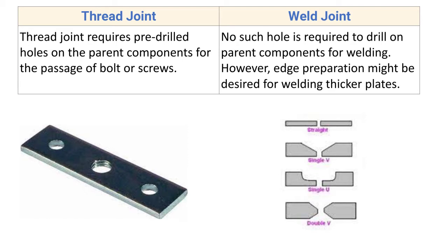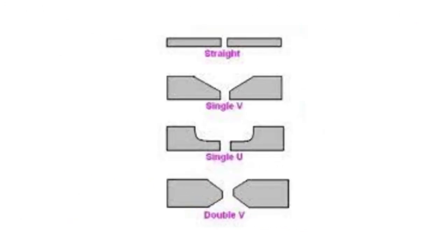However, edge preparation might be desired for welding thicker plates. Here you can see different types of edge preparation: single V, single U, and double V. If the thickness of the plate is less, we can directly join it together as seen in the first diagram. If the thickness is more, we have to do edge preparation.